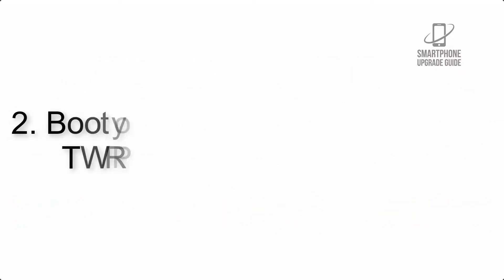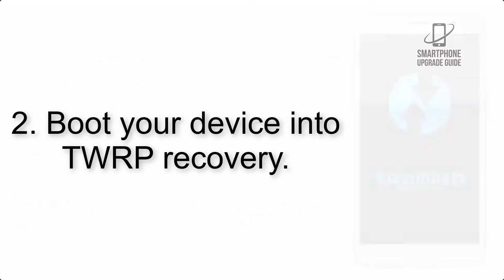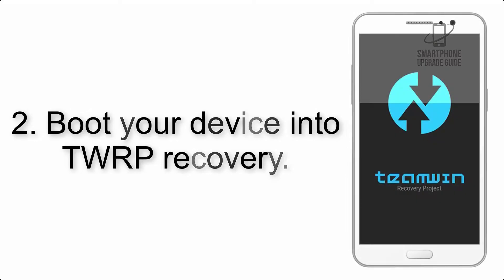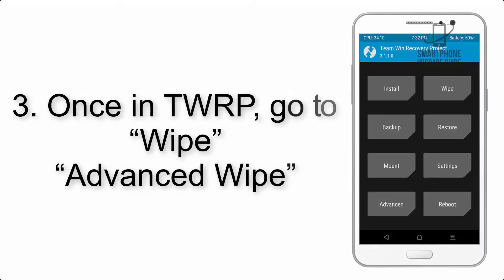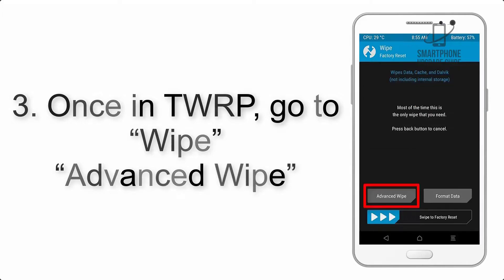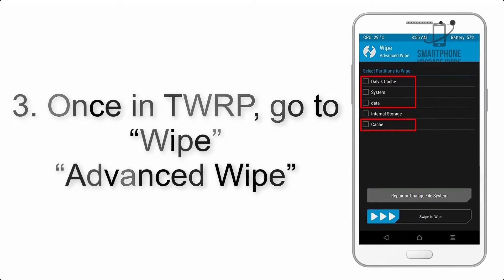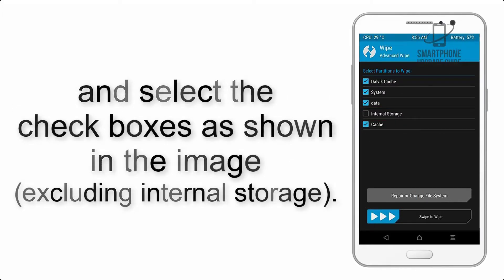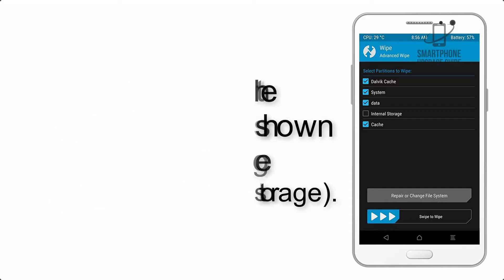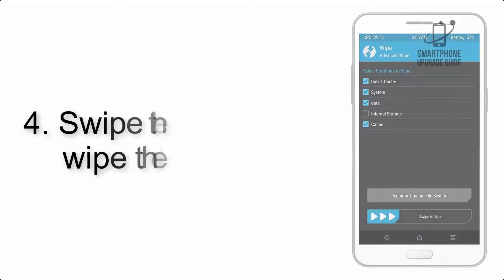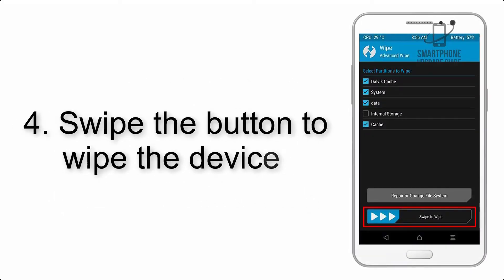Step 2: Boot your device into TWRP recovery. Once in TWRP, click on Wipe, then Advanced Wipe, and select the checkboxes as shown in the image, excluding internal storage. Step 4: Swipe the button to wipe the device.